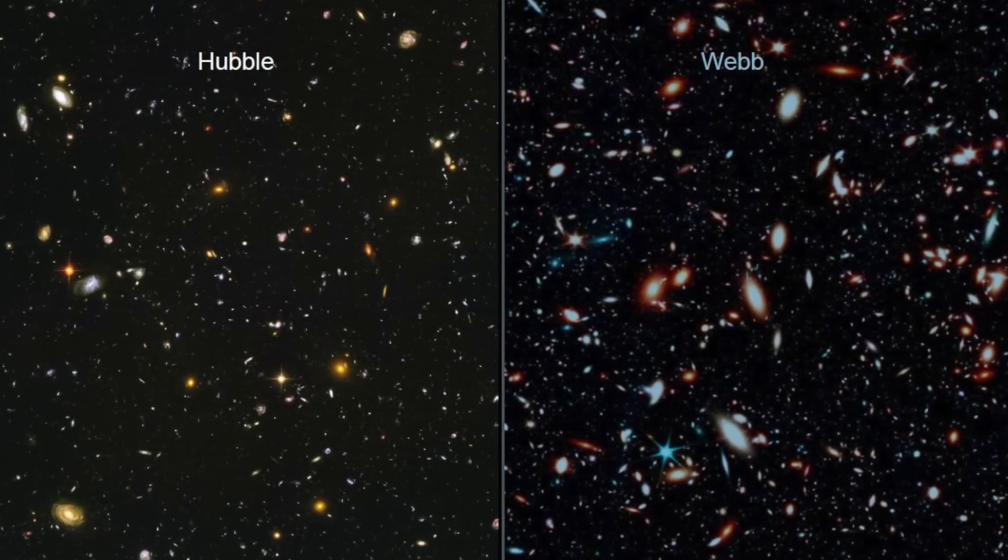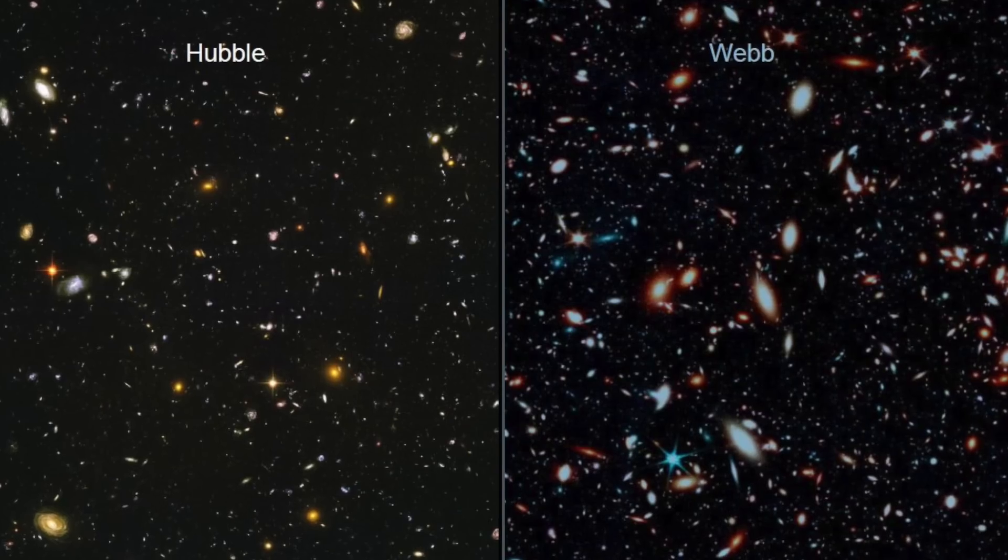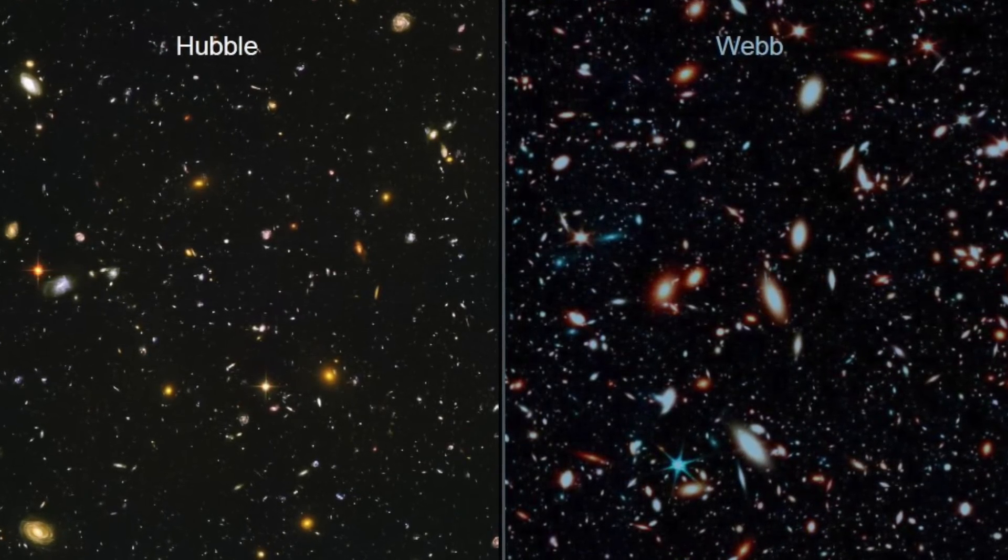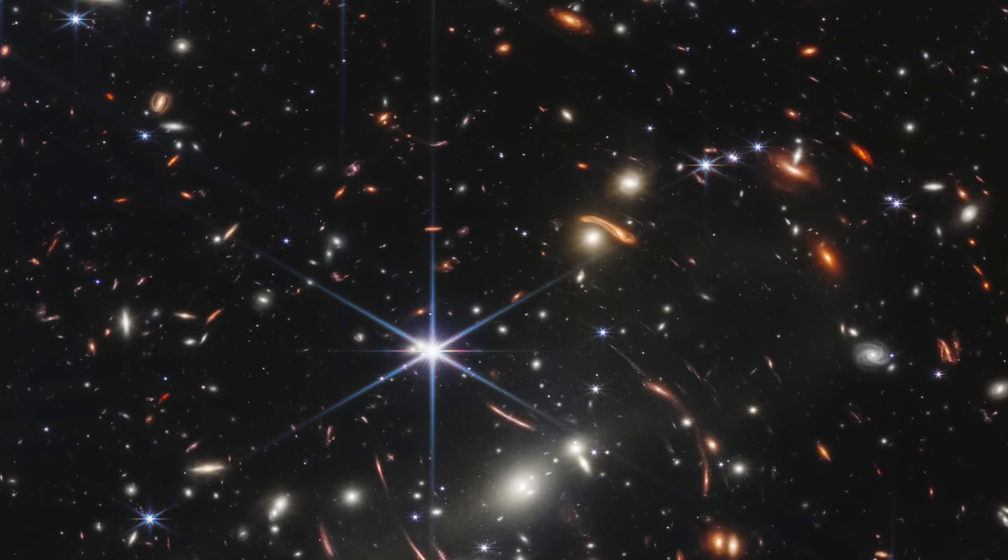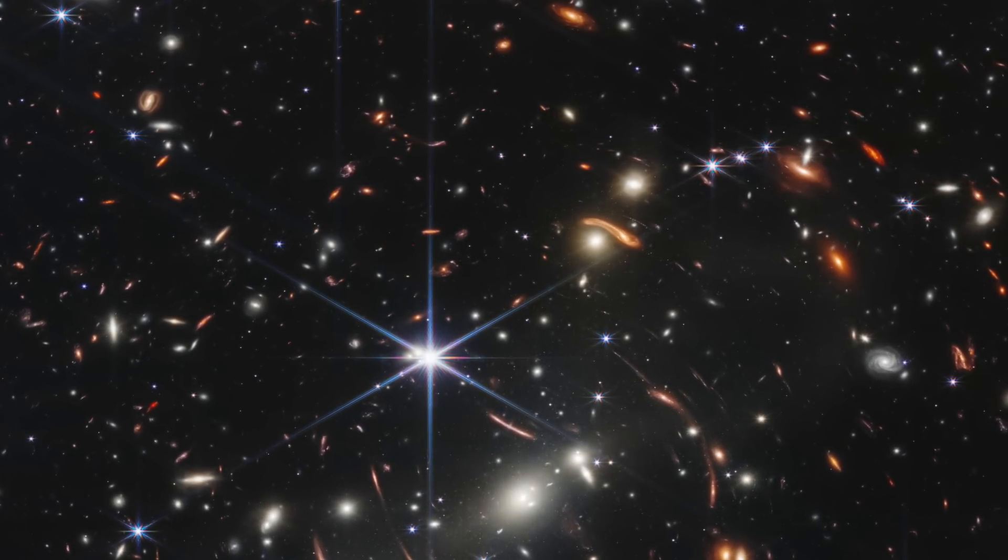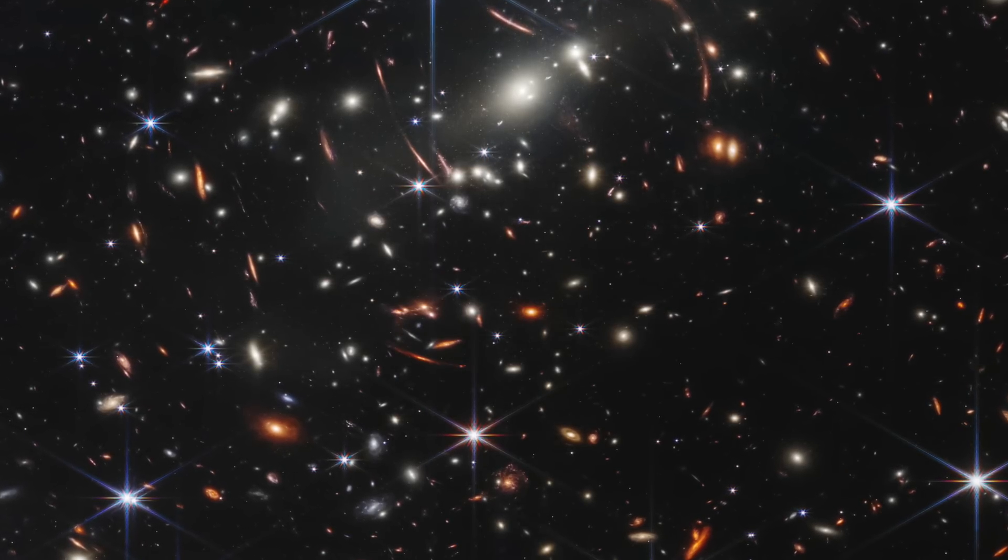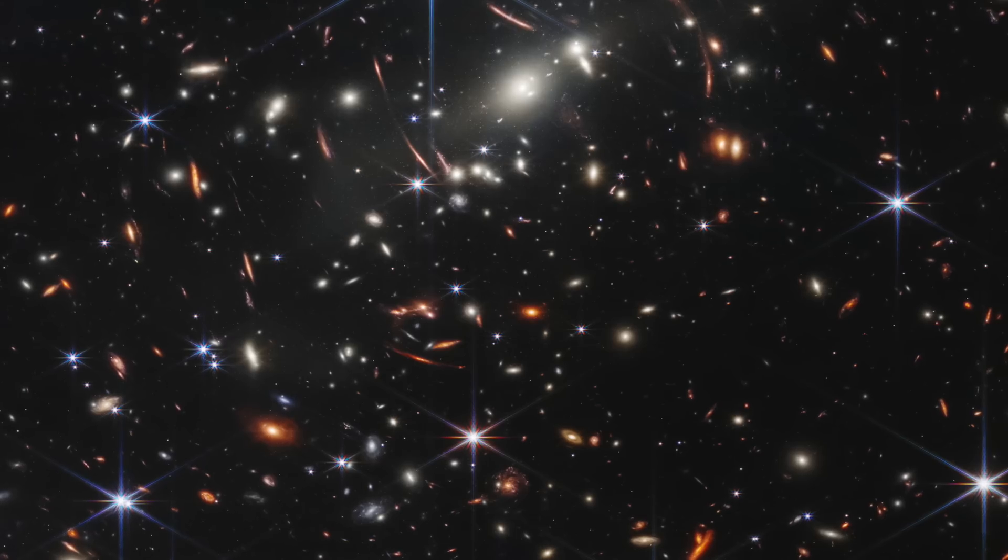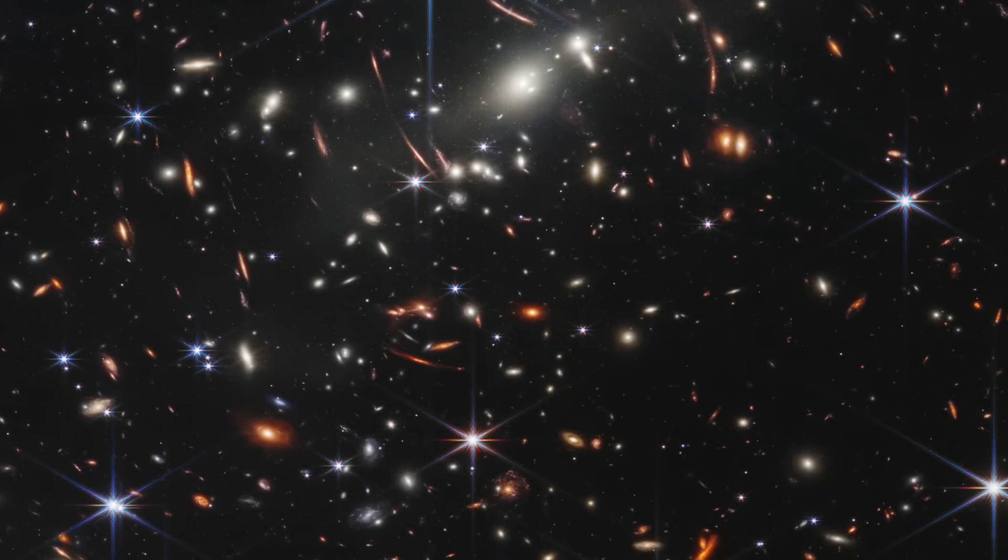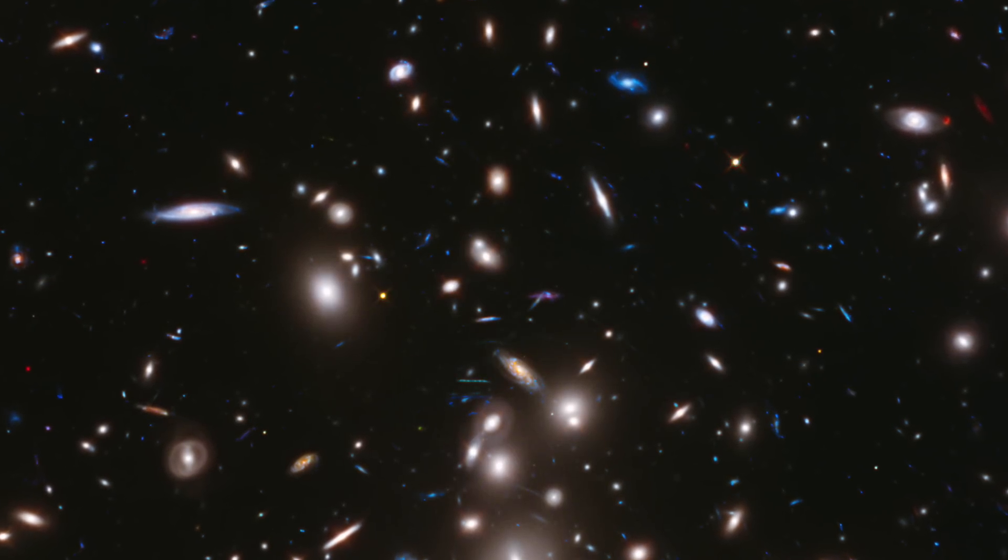James Webb's first photos will include the deepest image of our universe. The James Webb Space Telescope is NASA's largest and most powerful space telescope. The James Webb Space Telescope's home is known as L2, a spot in space near Earth opposite the sun. The James Webb Space Telescope will be able to stay in line with Earth as it orbits the sun. This is also a popular spot for other telescopes, including the Herschel Space Telescope and the Planck Space Observatory.